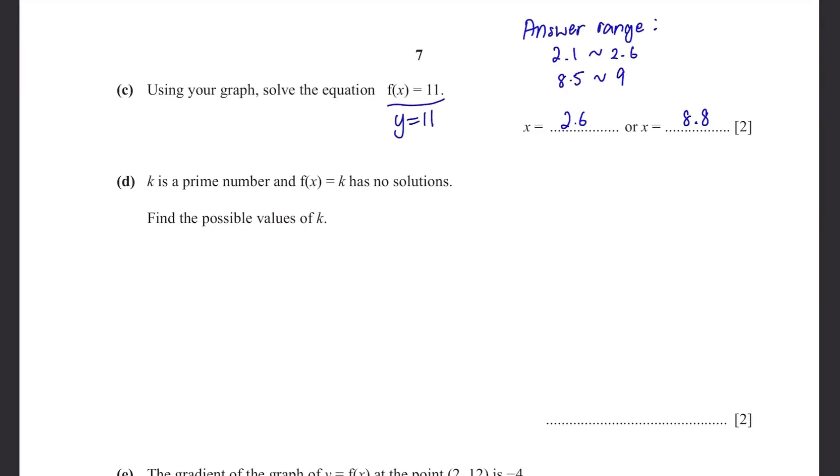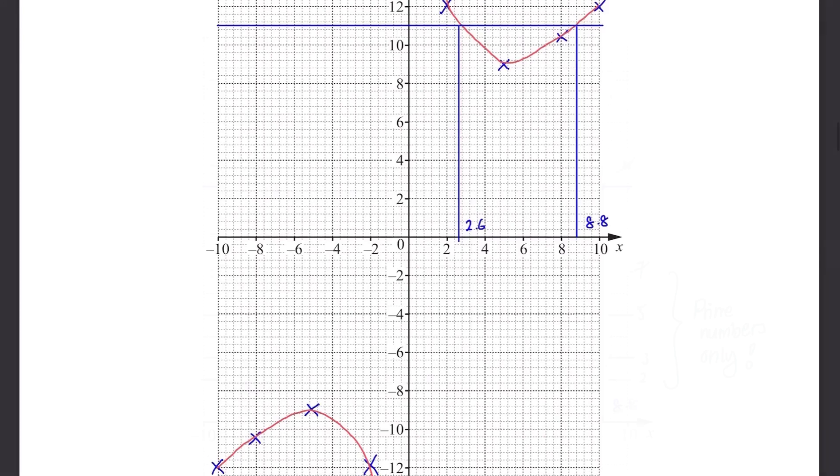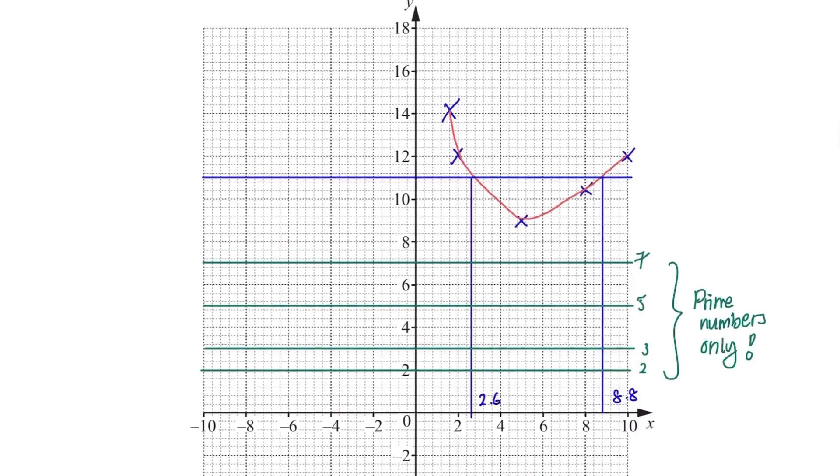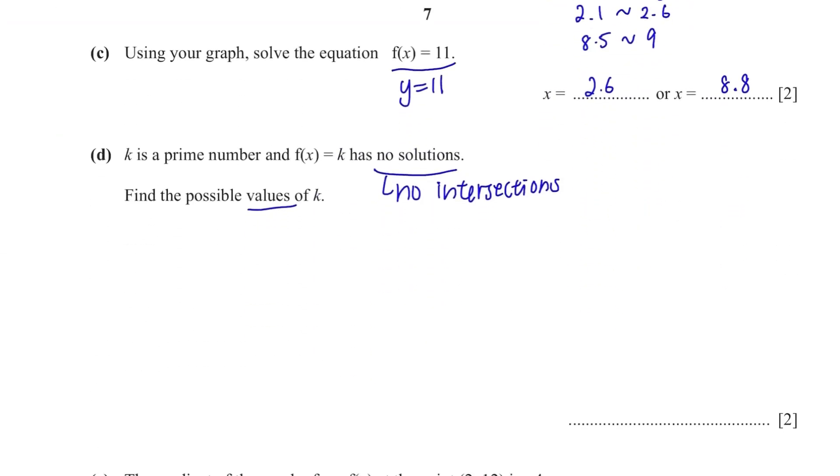Part D. K is a prime number and f(x) equals to k has no solutions. Find the possible values of k. If it has no solutions, it means that there are no intersections like the question above. Just remember, the solution that they talk about here is the same as the intersection. So from the graph, where can we draw a horizontal line and have no intersection? They can be drawn like this: 2, 3, 5 and 7. 4 possible answers and you'll write all of them.